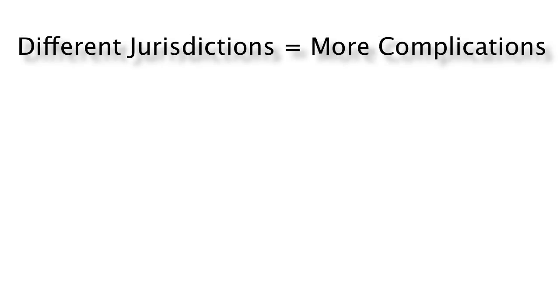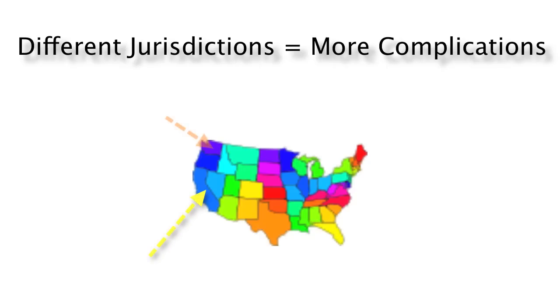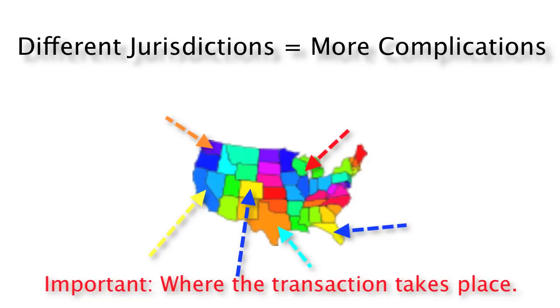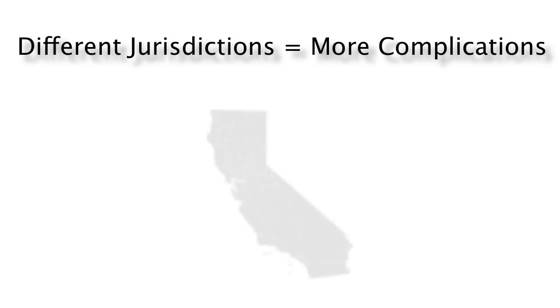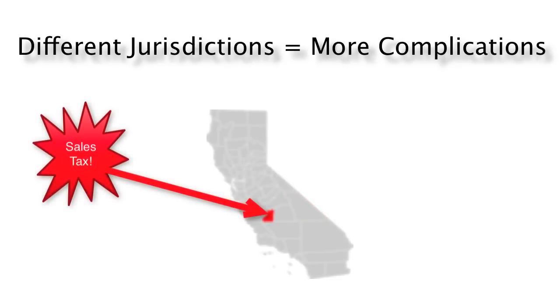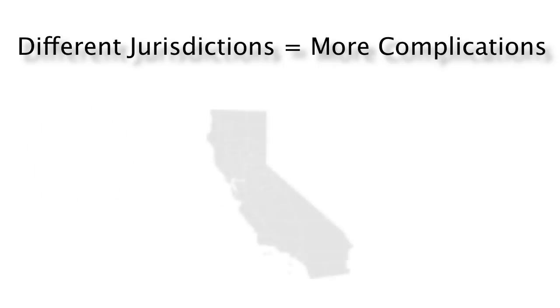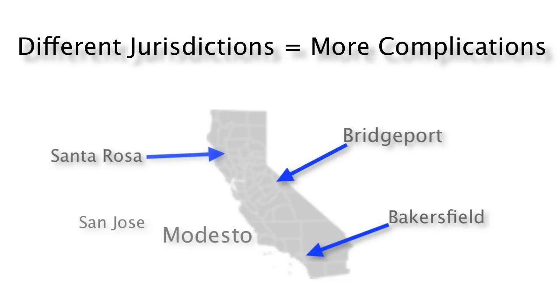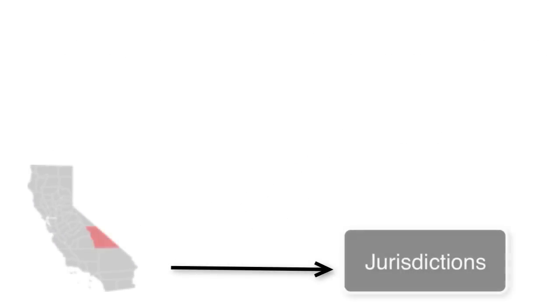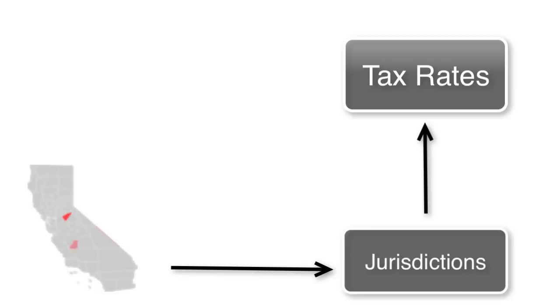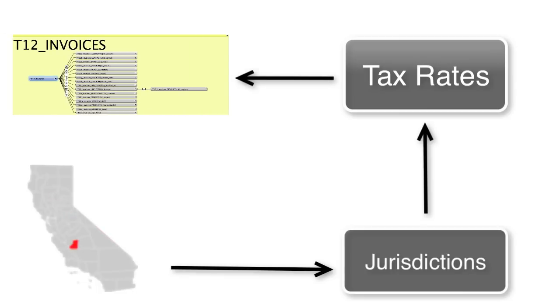It can get more complicated if you have different jurisdictions that require you to charge different rates based on where your customers are. This gets into rules about where the transaction actually takes place. Even within the state of California, it depends where the customer is, and different counties or parishes set their own tax rate. The way you would support multiple jurisdictions with multiple tax rates would be a lookup table with a jurisdiction and tax rate attached to it.